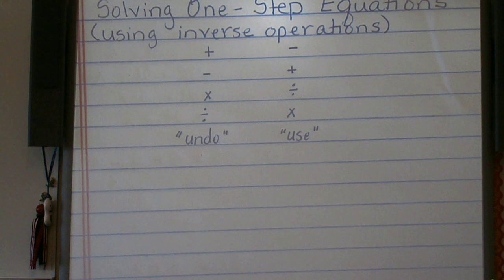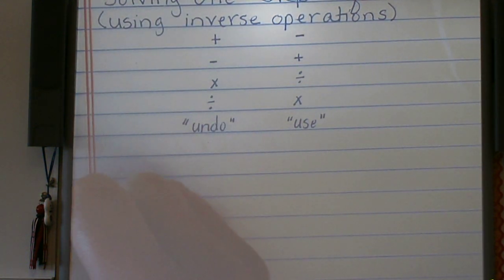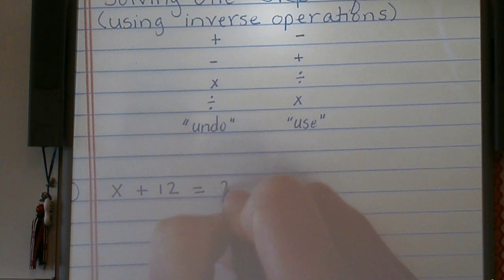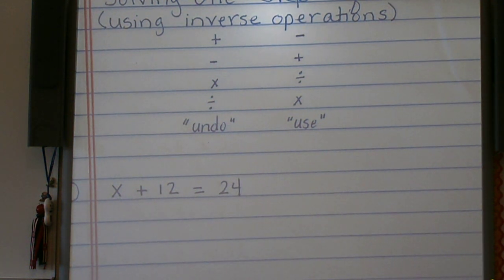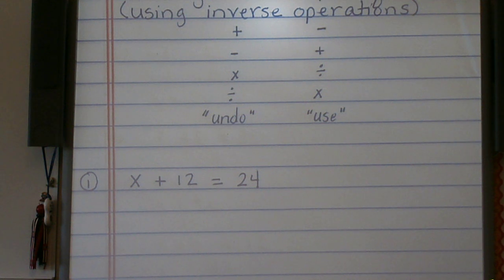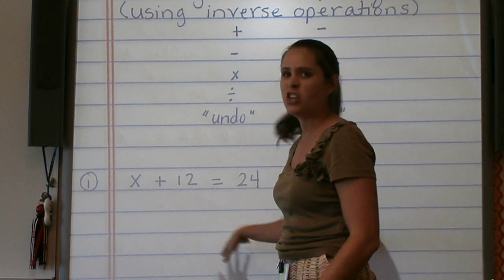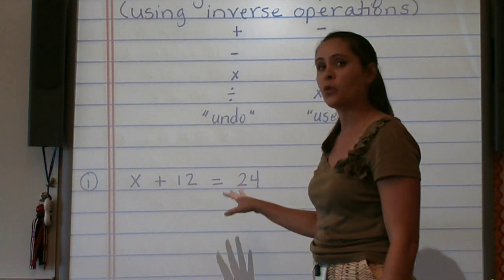So let's look at some one-step equations, and I want you to maybe on your paper work along these problems with me. Our first example is going to be x plus 12 equals 24. Now we can probably use our mental math to solve this. Using mental math means that we see the problem and we, in our head, say what plus 12 gives me 24, and then you just write it down. So that's using mental math.